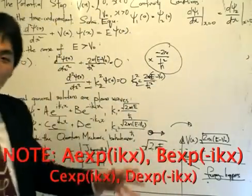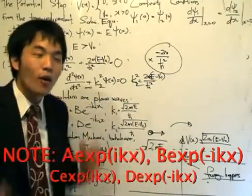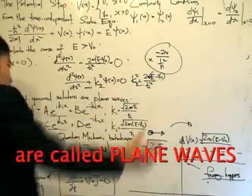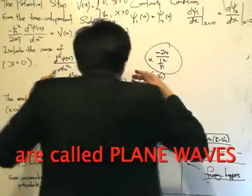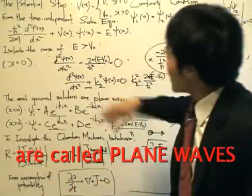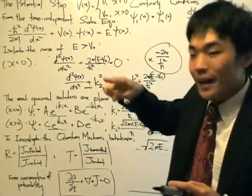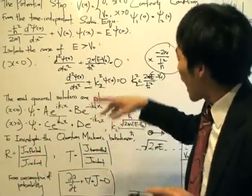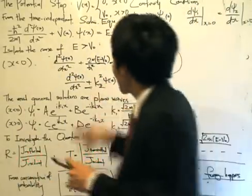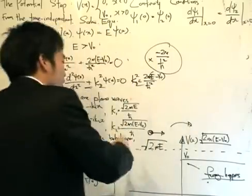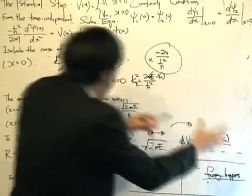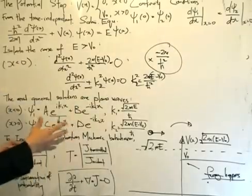To be more specific, it's the wave of the particle, or the wave-like behavior of the particle moving from left to right. Conversely, these two solutions — e to the minus i·K1 and e to the minus i·K2·X — represent solutions of the particle moving from the right to the left.